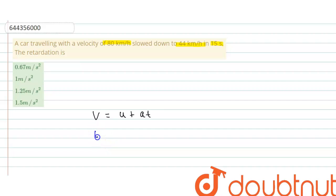Okay, so initial velocity is 80 km per hour, which is equal to 80 times 5 by 18 meter per second. So this is equal to 22.22 meter per second.